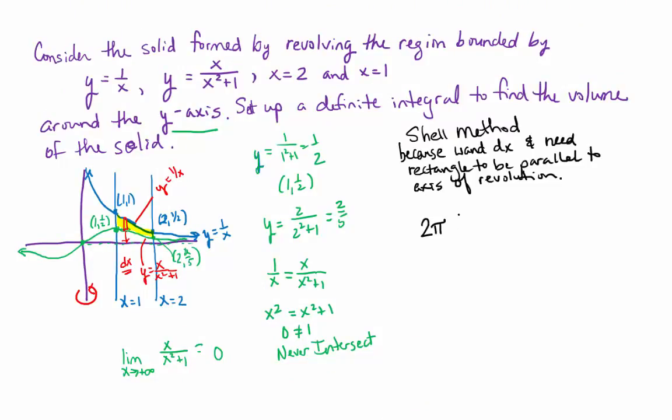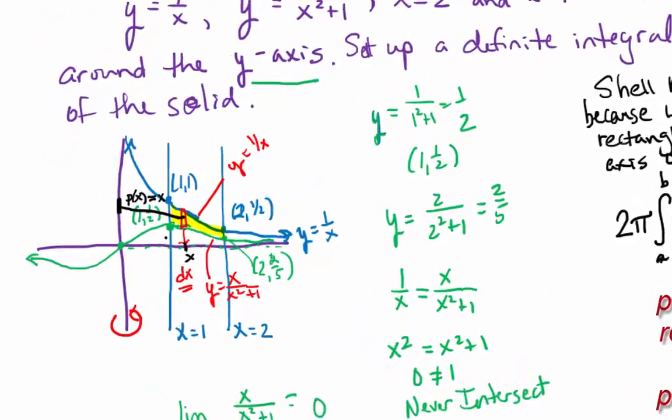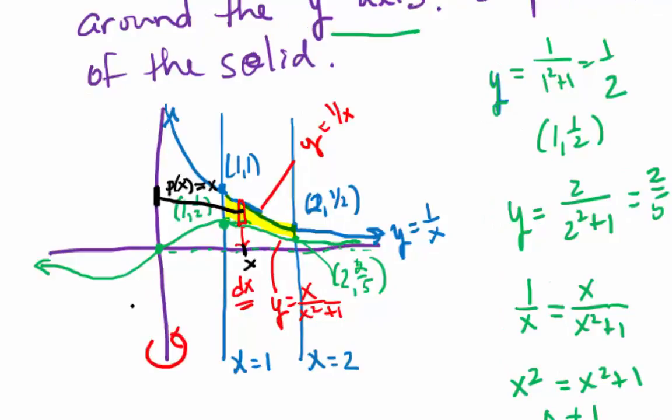In that case, let's write down the formula that we use for the shell method when we have a dx problem. 2 pi times the integral from a to b of what? P of x, the radius. H of x, the height of the rectangle. Dx, the width of the rectangle. So now we go about identifying p of x and h of x. P of x is by definition the distance between the axis of revolution and the center of that rectangle. But that's always, because of the problems that I'm giving you, that's always going to be x or y. In this case x. Some random x value is in the middle of the rectangle. That's the distance between the axis and the center of the rectangle.